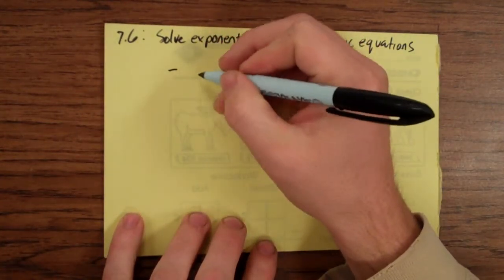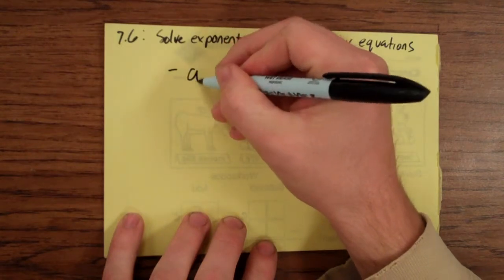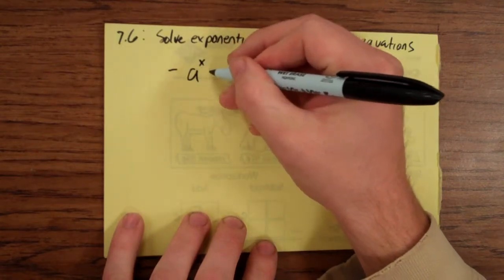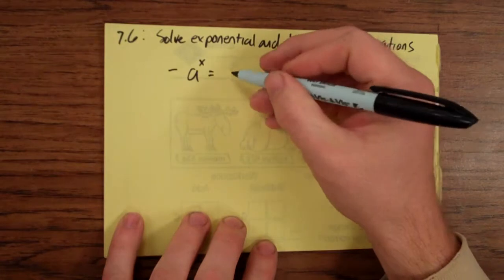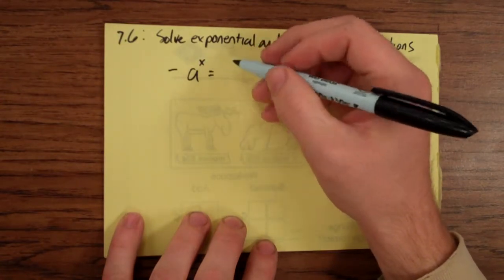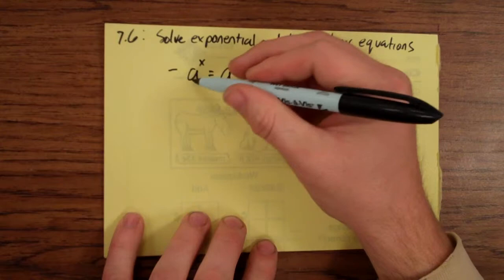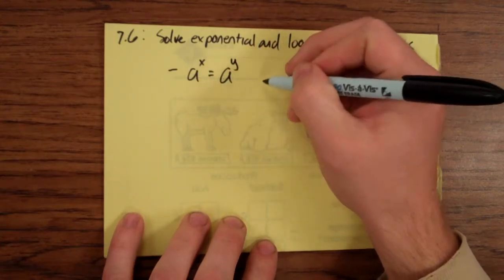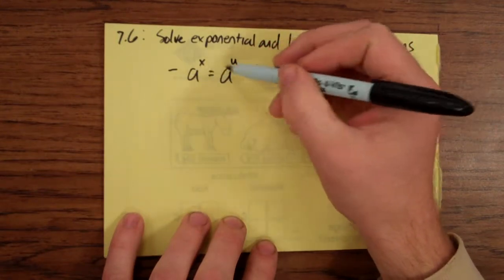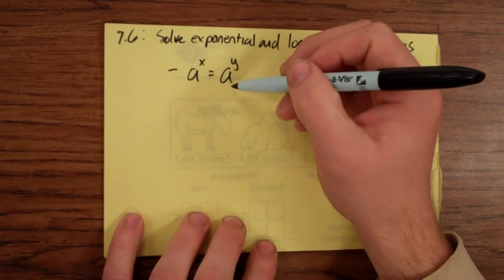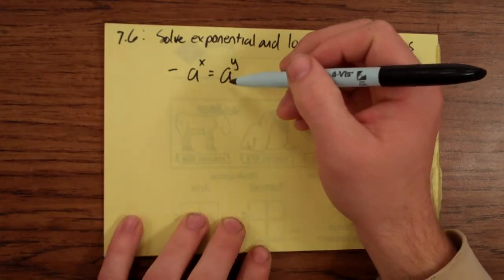So the first kind of equation is, say I have something raised to a power, and it's equal to, and let's say there's a variable in here, it's equal to the same number raised to another power. If I have the same base on both sides, then we'll look at that kind of equation.